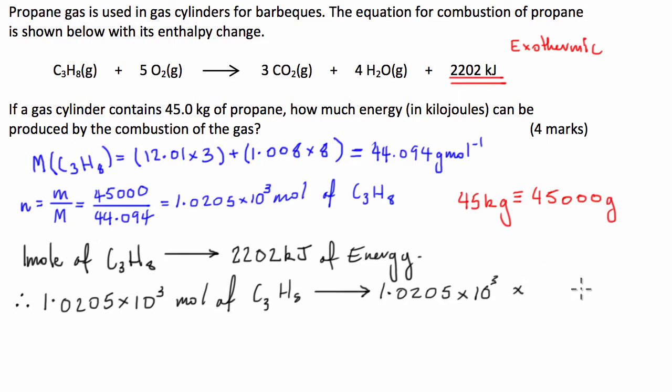So that's how many moles we get. That's how many kilojoules per mole this reaction produces. Once we multiply them together, it's not very complicated maths, we get 2.25 times 10 to the 6 kilojoules. And that is our final solution.